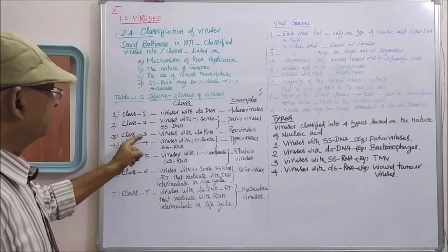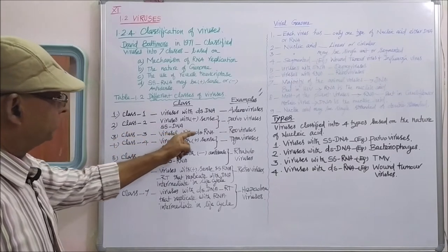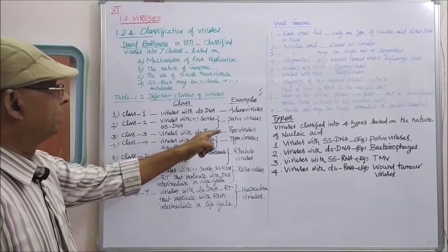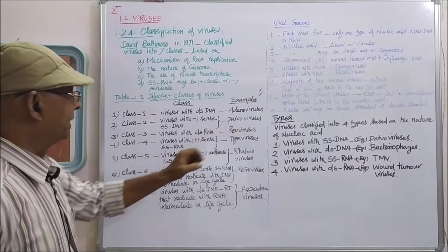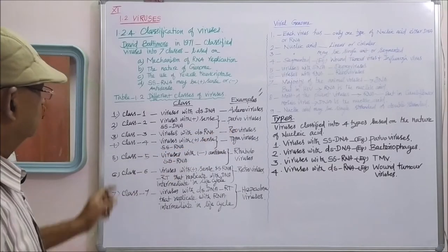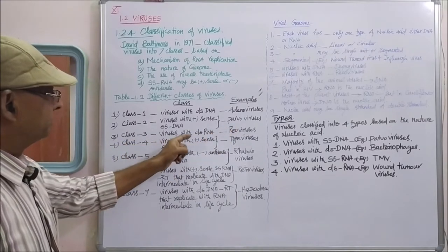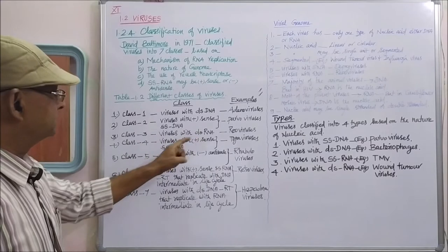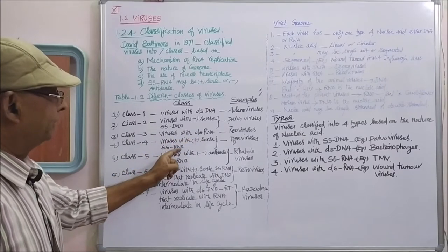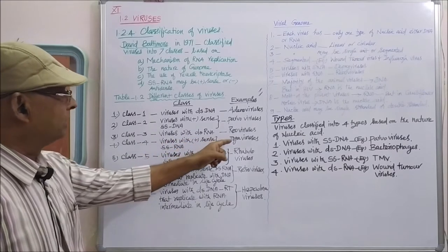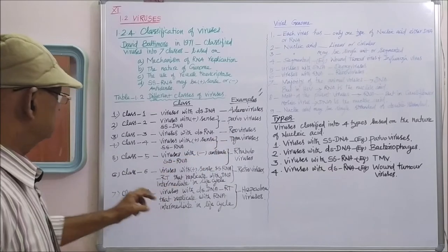Class three: viruses with double-stranded RNA. Example: reoviruses. Class four: viruses with plus-sense single-stranded RNA. Example: togaviruses.